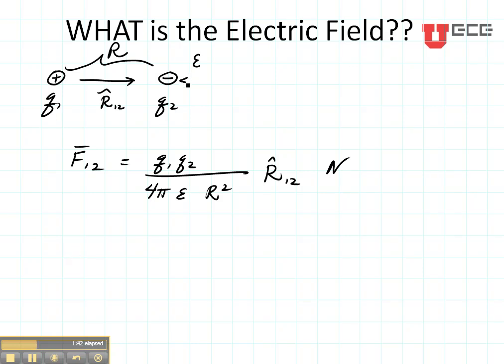Now let's suppose that right here where Q2 is, we put a 1 coulomb test charge. In that case, the force from 1 to 2 would be equal to Q1 times 1 divided by 4 pi epsilon R squared, again in the 1, 2 direction.